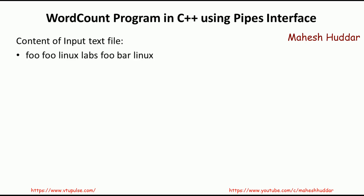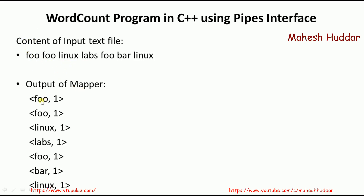In a Hadoop MapReduce program, the input will first be given to the mapper program. The mapper program converts this textual file into an output of key-value pairs, where the key will be the word and the value will be 1. So the output of the mapper looks like: foo 1, foo 1, and the same thing is repeated for all the words present in the textual file.